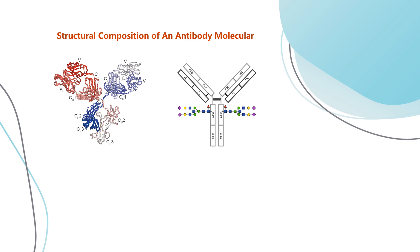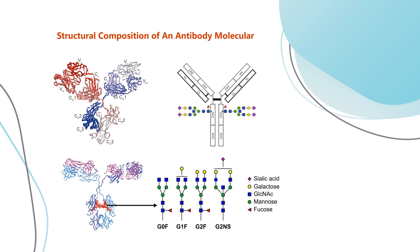The constant region and heavy chain is divided into three sub-regions: CH1, CH2, and CH3. For antibodies produced by eukaryotic cells, the CH2 regions are usually modified by glycosylation with sialic acid, galactose, N-acetylglucosamine, mannose, and fucose. The glycosylation can be classified into several types, such as G0F, G1F, G2F, and G2NS, which differ in immunogenicity, biological activity, and pharmacokinetics.